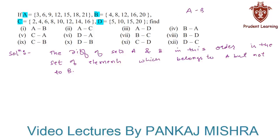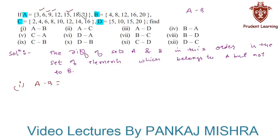Keeping this concept in mind, let us try to solve the given question. In the first section we have A minus B. This simply means the set of all elements that are in A but not in B. Here we can see that 3, 6, 9, 15, 18 and 21 are present only in A and not in B. So A minus B is the set containing elements 3, 6, 9, 15, 18 and 21.